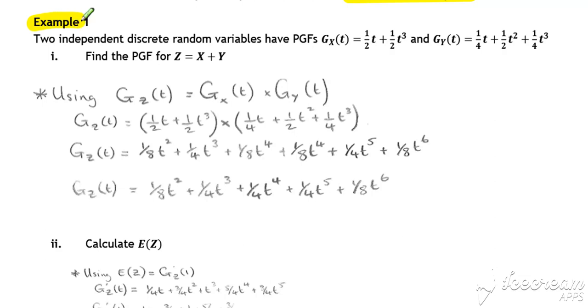So example one, two independent discrete random variables, each with its own probability generating function. If we want the probability generating function for the combined distribution, Z equals X plus Y, then we can just multiply together the probability generating functions and then simplify.